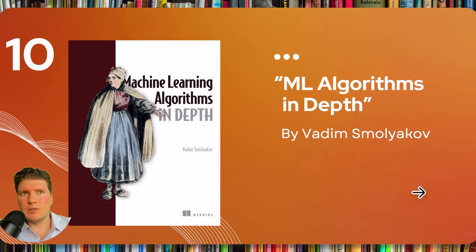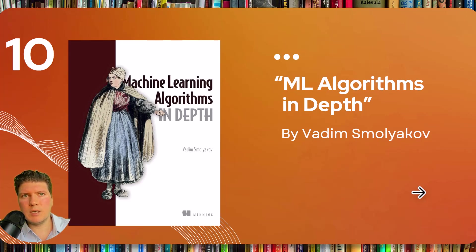The final book I wanted to show you is the one I wrote, called ML Algorithms in Depth. This book focuses on the derivation and implementation of some of the key algorithms in ML from first principles. It helps you develop mathematical intuition for how ML algorithms work so you can improve your model performance and solve complex ML problems. It covers topics like Monte Carlo stock price simulation, image denoising using variational inference, the EM algorithm for hidden Markov models, active learning, Bayesian optimization, Dirichlet process k-means, energy minimization algorithms, and more. Check it out.